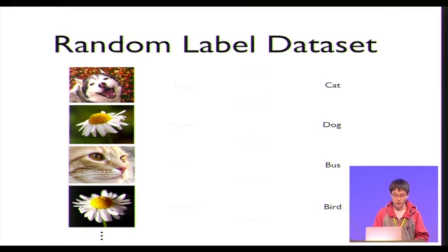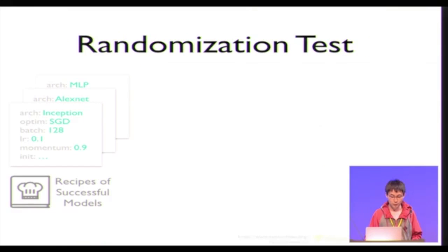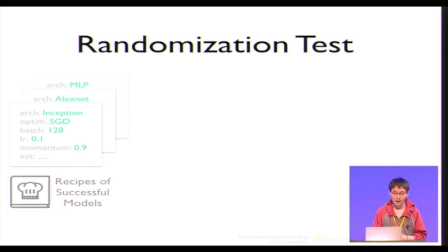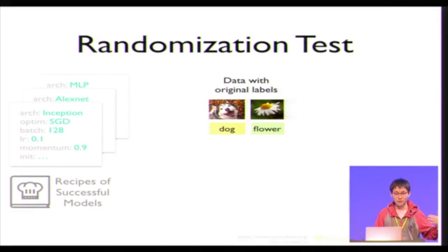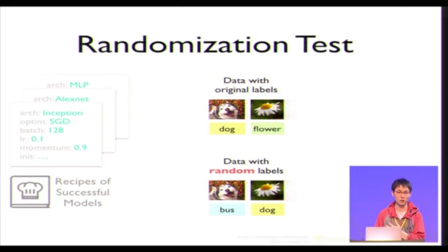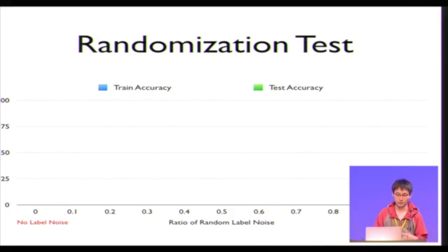With this random label dataset, we go online and find successful models on CIFAR-10 and ImageNet, take their open-source implementations, and port them to TensorFlow. We take exactly the same architecture, the same hyperparameter configuration and learning rate scheduling, and then run them on both the original CIFAR dataset and the random label dataset, and compare the results.